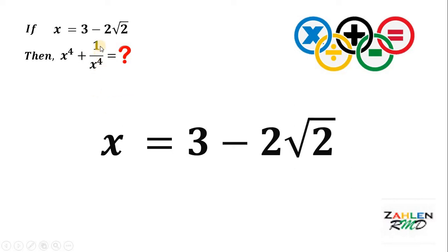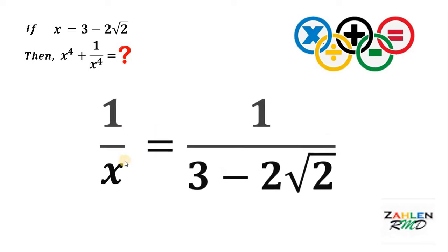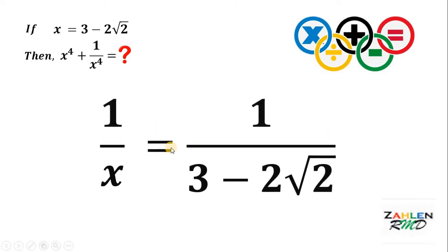Now, take note that we have 1 over x to the fourth, which tells us that we need to find 1 over x. To do that, let's take the reciprocal of this equation. So, we have 1 over x equals 1 over 3 minus 2 square root of 2.